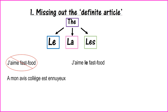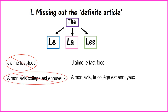Another example I saw: 'À mon avis, collège est ennuyeux' — 'In my opinion, school is boring.' Scandalous. Once again they've missed out 'the.' You have to say 'À mon avis, le collège est ennuyeux.' And another: 'Je déteste devoir' — they've missed out the definite article. Devoir means homework and has an S on the end in French, making it plural, so we say 'Je déteste les devoirs.'